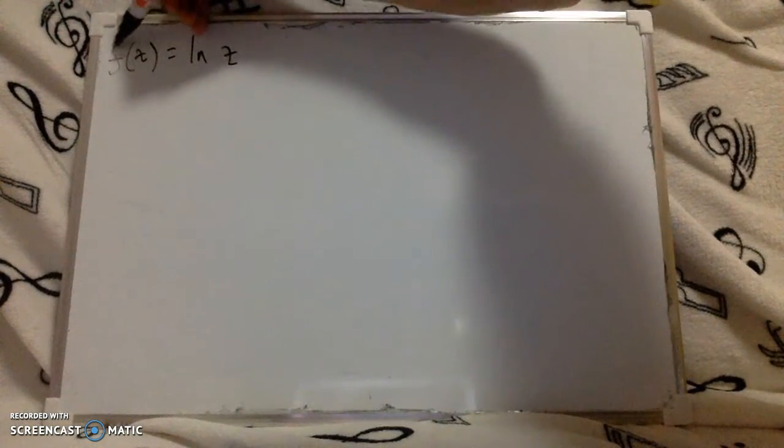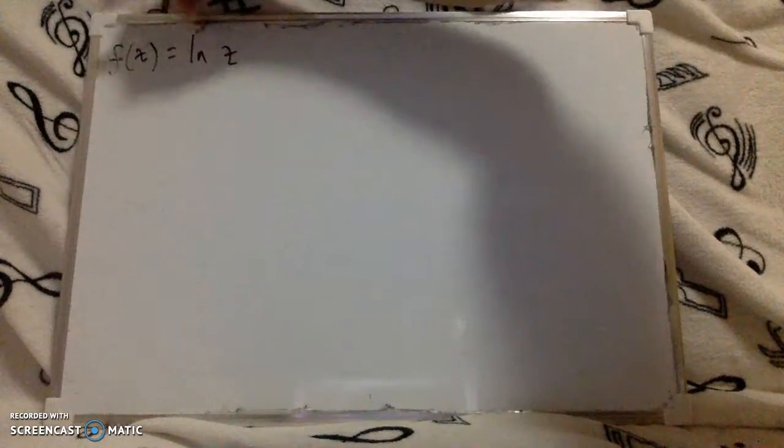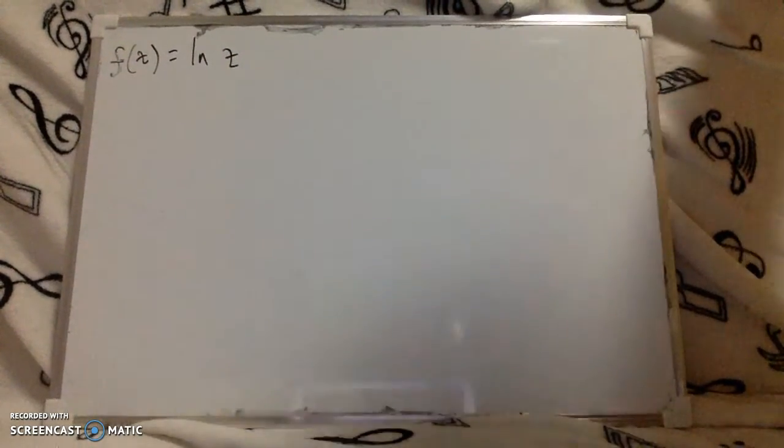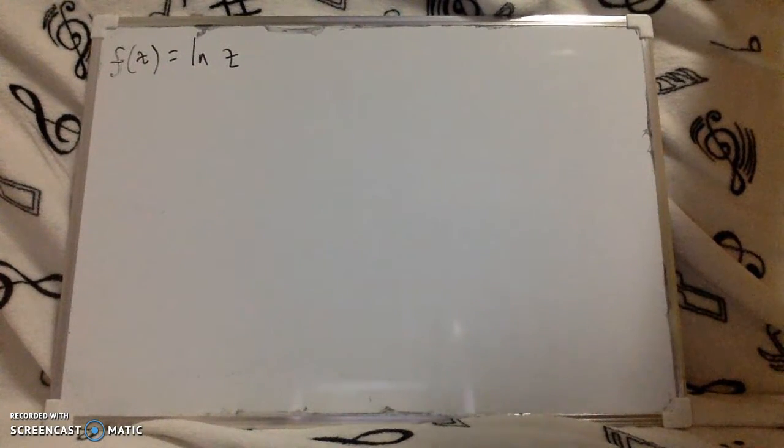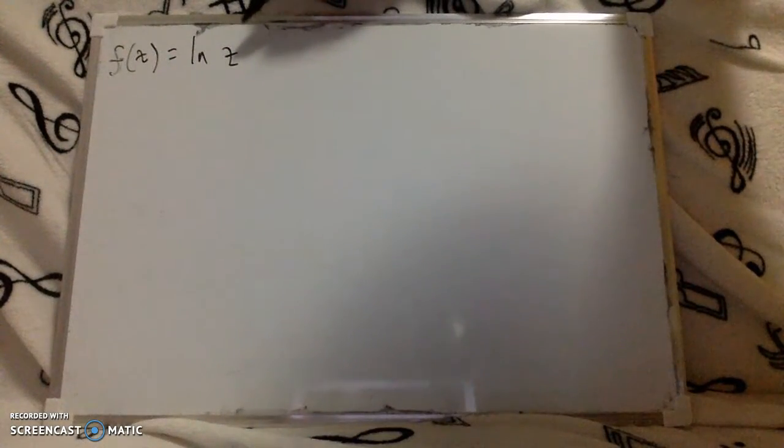So in this question we're asked to show that any branch of log z is analytic. Now to do this we're going to use the Cauchy-Riemann conditions. The Cauchy-Riemann conditions need you to write the function of z in terms of x and y, where z equals x plus iy.